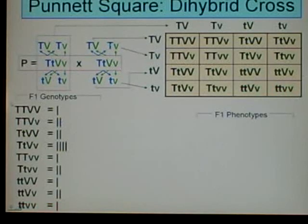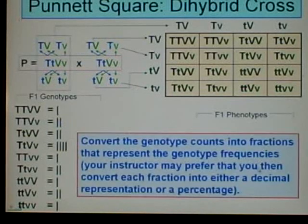And after we've processed all 16 squares, there are our genotype counts, our unique genotypes and their counts. Next, we're going to convert these genotype counts into fractions that represent the genotype frequencies. Your instructor may prefer that you then convert each fraction into either a decimal representation or a percentage, but for this we're going to stick with fractions.